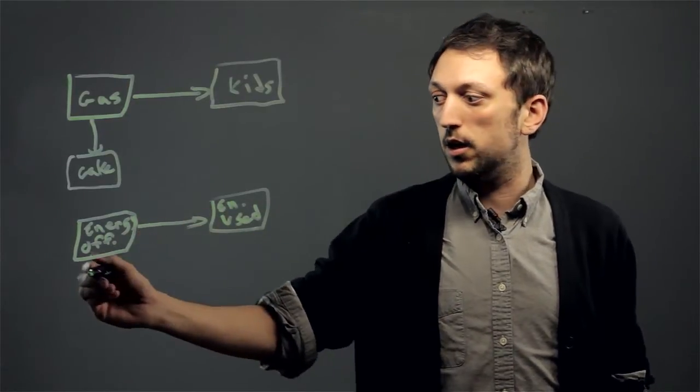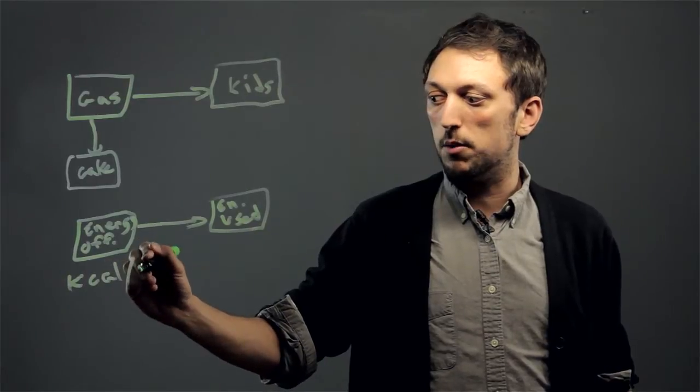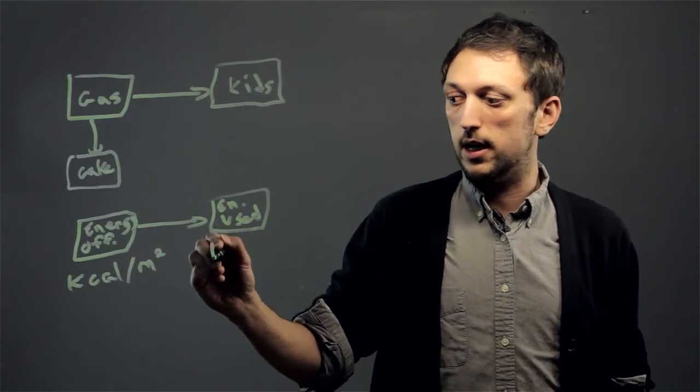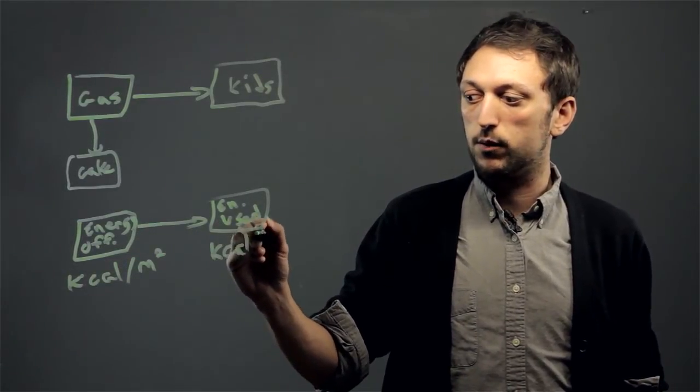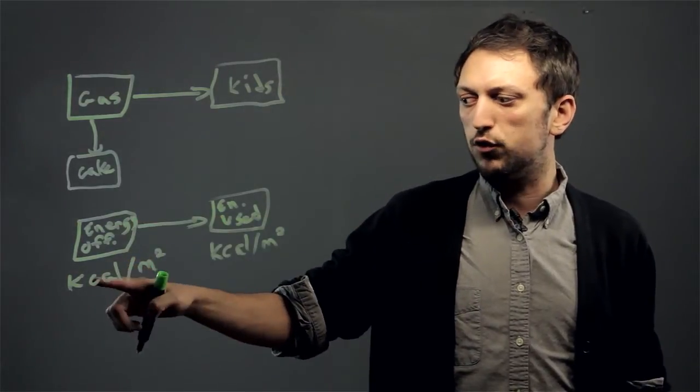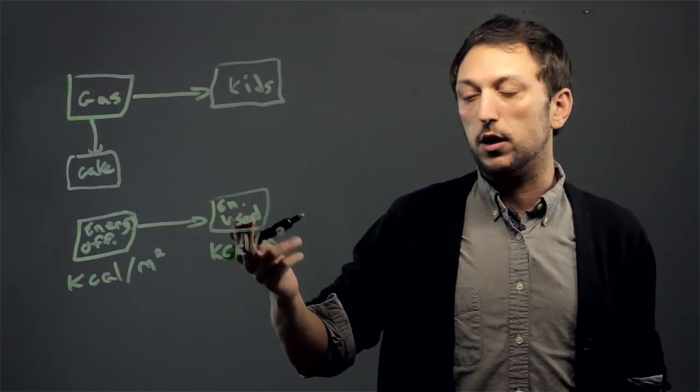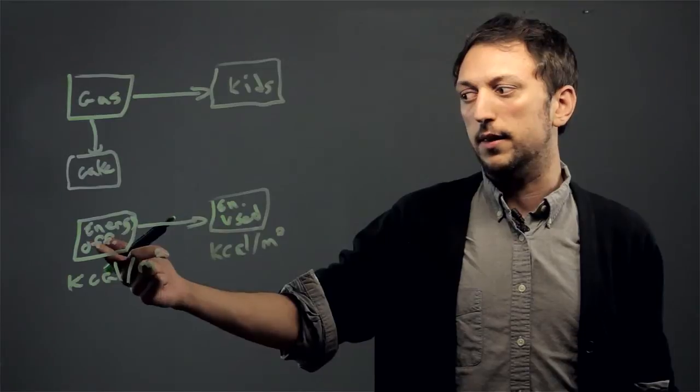You might see some math below it, for example kilocalories per meter squared and kilocalories per meter squared. Because this is where the arrow is flowing from, this would usually be the bigger value and this the smaller value, as the energy used probably couldn't be greater than the energy offered.